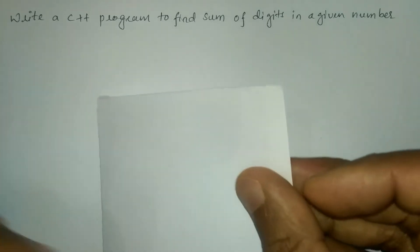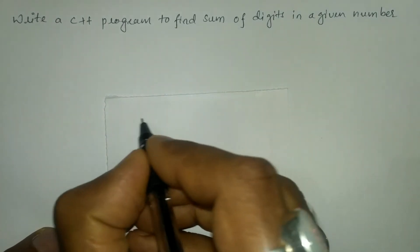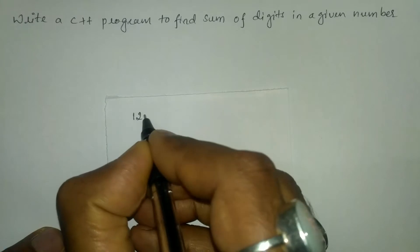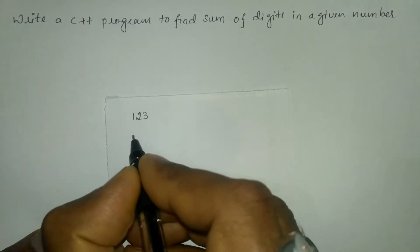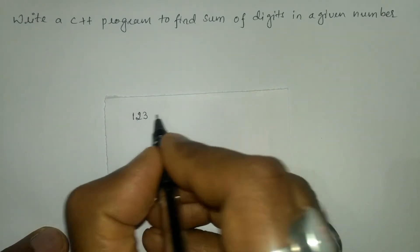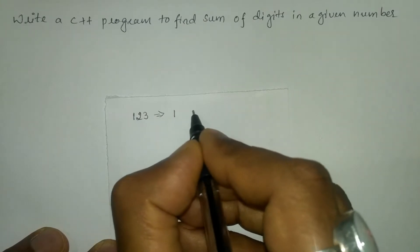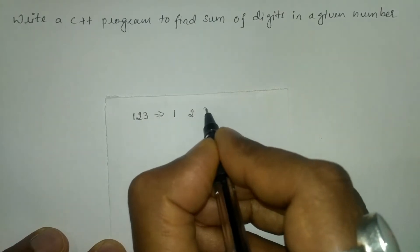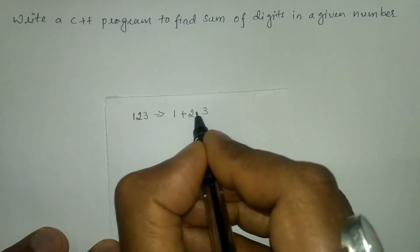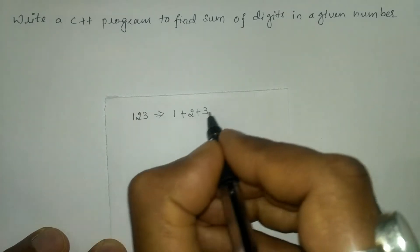So what is the meaning of this? Let us try to understand. For example, I'm going to write the number 123. So this has to separate each digit 1, 2, 3 and it has to perform addition between these digits.